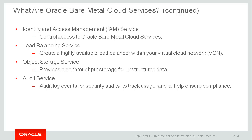Use the Identity and Access Management Service to control access to bare metal cloud services. You can create and manage compartments, user groups, and policies that define permissions on resources. The Load Balancing Service allows you to create a highly available load balancer within your virtual cloud network to distribute internet traffic to your compute instances. The Object Storage Service provides high throughput storage for unstructured data, enabling near infinite storage capacity for large amounts of analytic data or rich content like images and videos. You can also back up your Block Volume storage devices to the Object Storage Service. Finally, the Audit Service provides visibility into activities related to your bare metal cloud resources. Audit log events can be used for security audits, to track usage and changes to resources, and to help ensure compliance with standards or regulations.